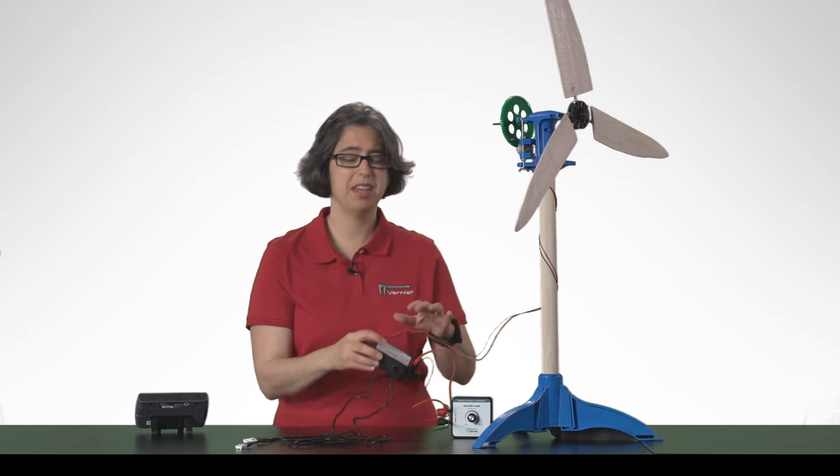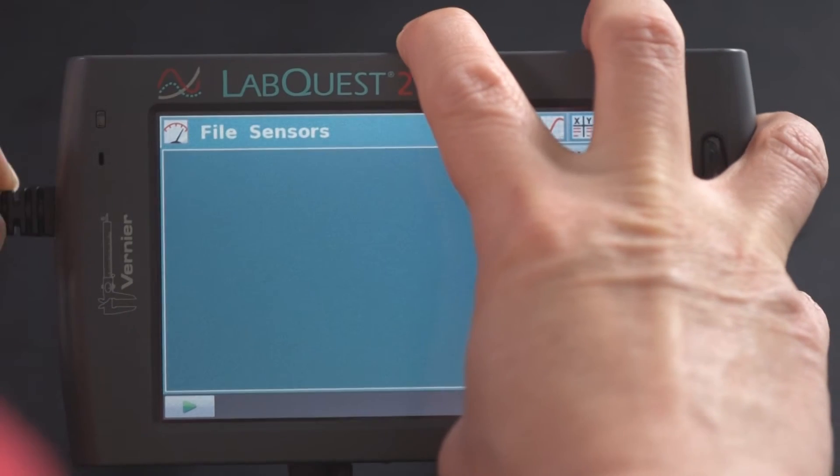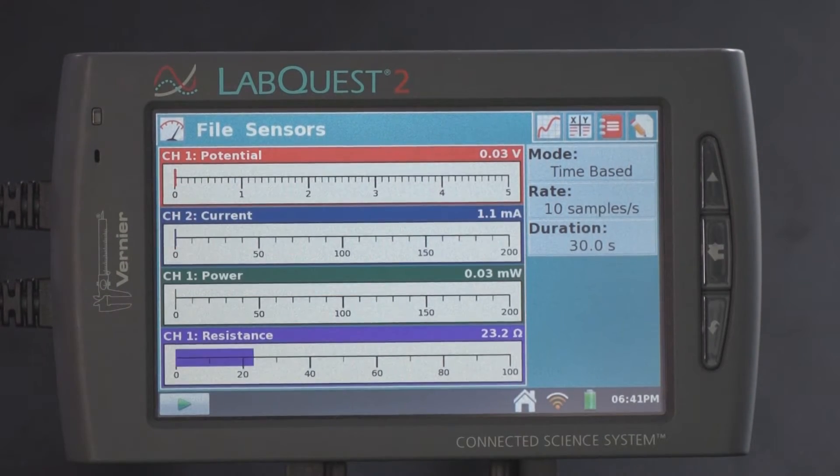When you hook the energy sensor up to an interface or a computer running our latest software, it will automatically pull up a set of meters to show voltage or potential, current, power, and resistance. It will also show energy on a computer, but this screen is too small.